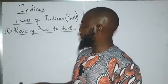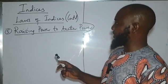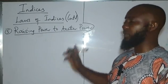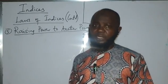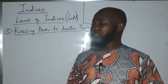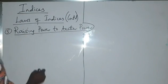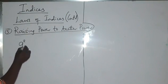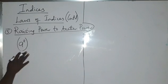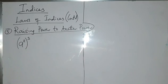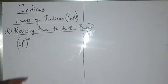We're looking at the fifth law of indices: raising a power to another power. So we have a power already, and we are now raising it to another power. For instance, if we have A raised to the power 2, and then that whole thing raised to the power 3 — how do we solve this?